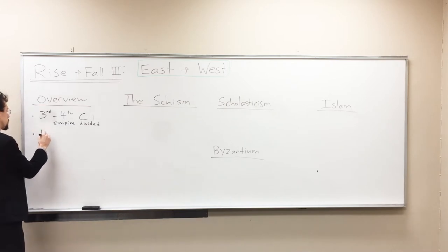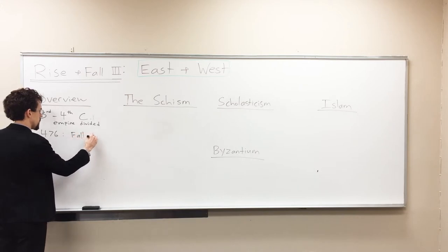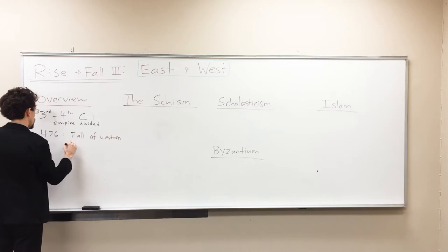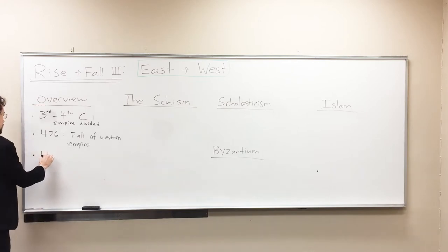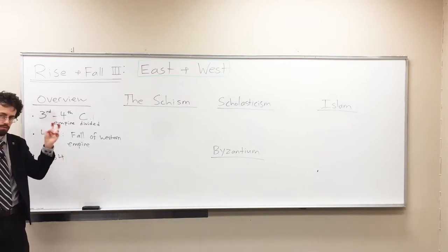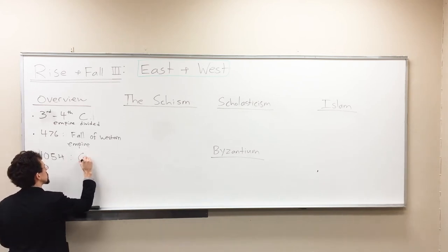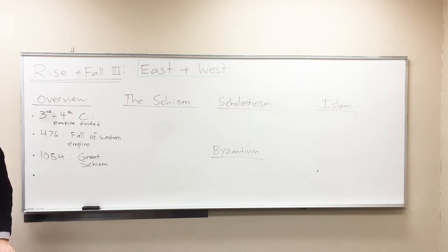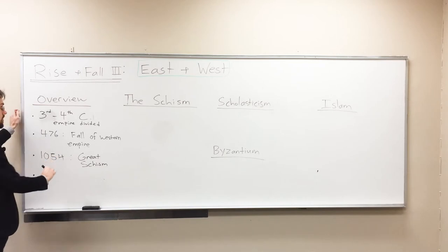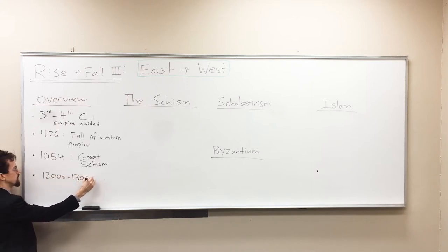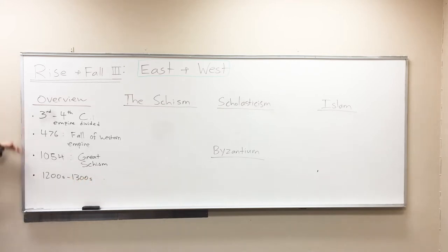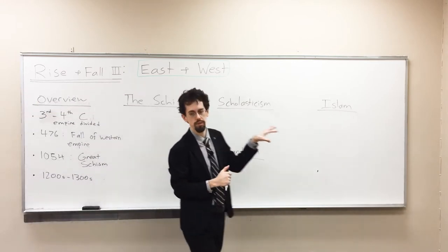Then 476, of course, is the fall of the Western part of the empire. All of these are complex, interesting historical points that we're just skipping over. And then 1054, about 500 years later, is the sort of nominal date of what's called the Great Schism between the Eastern and Western churches — though that is more complicated, because there wasn't a single event that touched all of this off exactly. And for scholasticism, the 1200s through the 1300s are really the high period of medieval Western scholastic thinking.